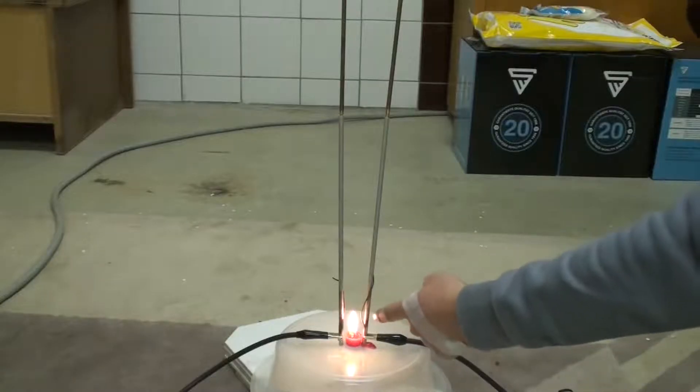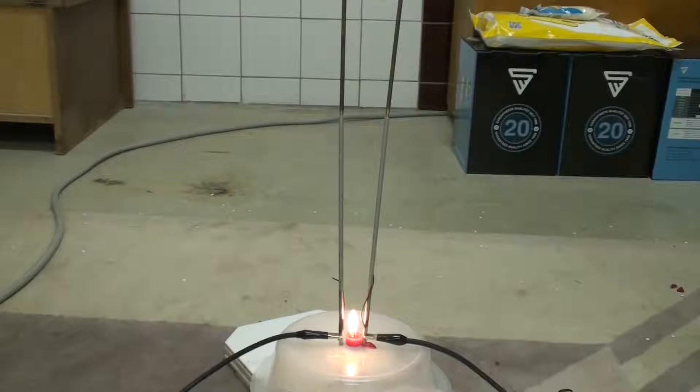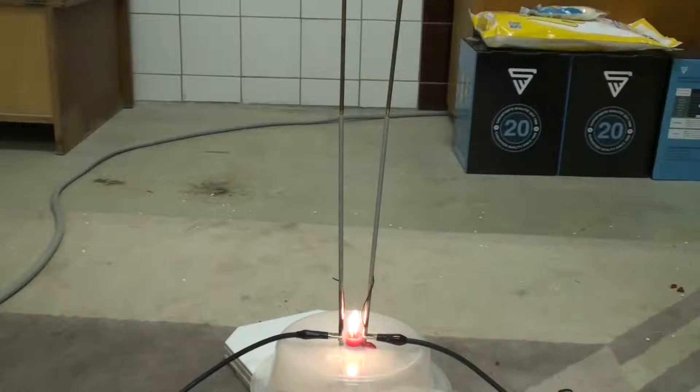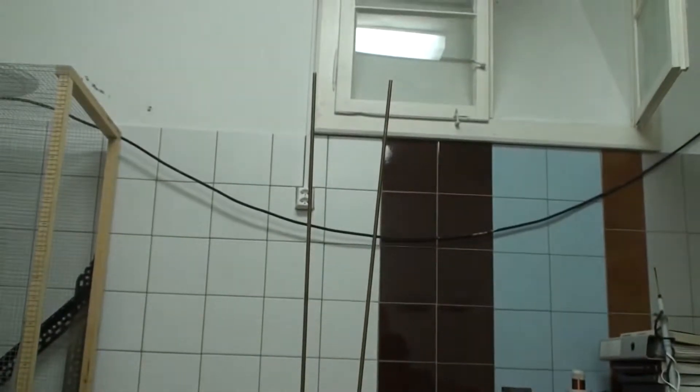After an arc is formed down here at the bottom of the Jacob's Ladder, the arc starts to heat up the air around it because it's extremely hot. And as you know, hot air rises. The hot rising air then takes the arc with it and basically draws it upwards until it breaks at the top of the Jacob's Ladder.